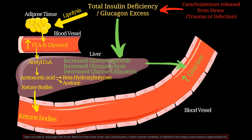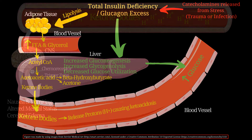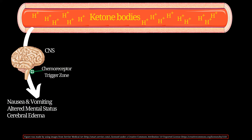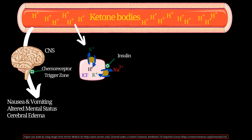The presence of ketone bodies in the blood indicates ketonemia. Ketone bodies have the tendency to release protons, which can cause ketoacidosis. In the central nervous system, ketone bodies stimulate the emetic centers in the chemoreceptor trigger zone of the medulla and cause nausea and vomiting. Additional CNS effects include altered mental status, where the patient cannot think properly, and cerebral edema in severe cases.